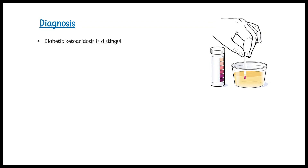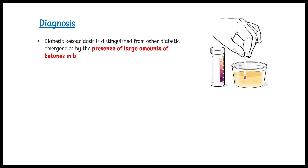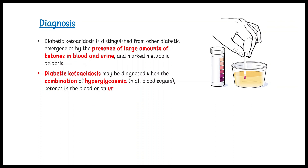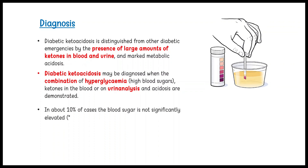Diabetic ketoacidosis is distinguished from other diabetic emergencies by the presence of large amounts of ketones in blood and urine, and marked metabolic acidosis. It may be diagnosed when the combination of hyperglycemia, ketones in the blood or on urinalysis, and acidosis are demonstrated. In about 10% of cases the blood sugar is not significantly elevated, and this is called euglycemic diabetic ketoacidosis.